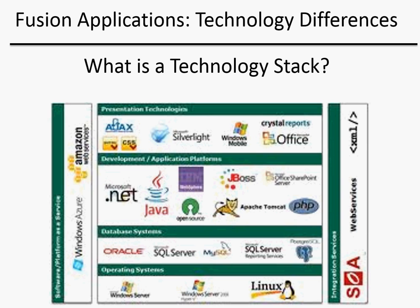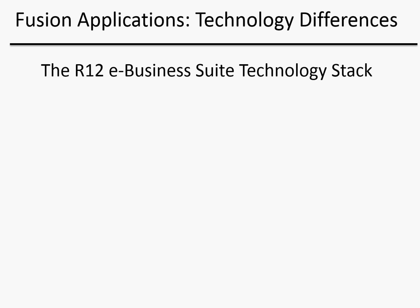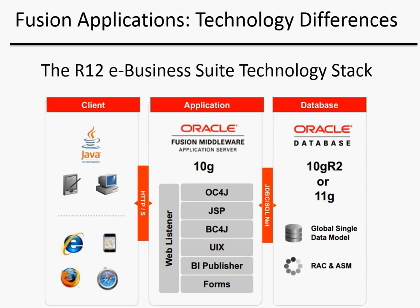That access could certainly be through a browser running on a PC, but it could also be a mobile application running on an iPad, an iPhone, an Android phone, or a Windows phone. The existing R12 E-Business Suite technology stack consists of an Oracle database on one end, which stores all of the information, and a Fusion Middleware application server which contains various technologies to serve up information to the end user. The client could be a user running a browser on a PC or using a mobile device such as an iPhone or an iPad.